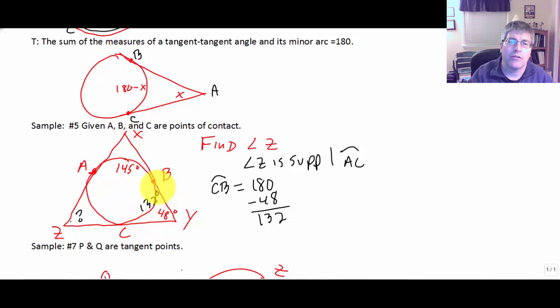So arc CB plus arc AB plus arc AC make up a full circle. So we can find arc AC by simply taking 360 minus 145 minus 132. And once we find arc AC, we will be able to find its supplement.